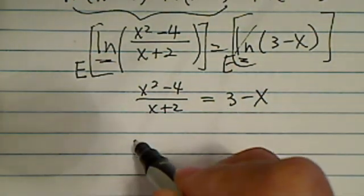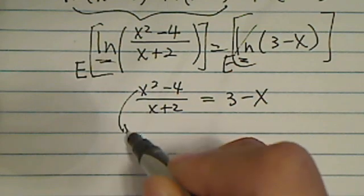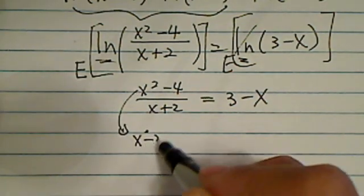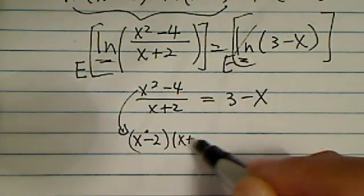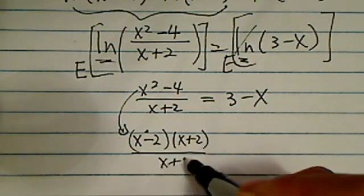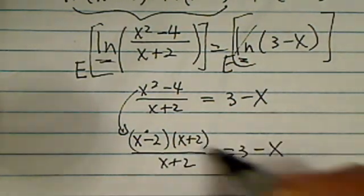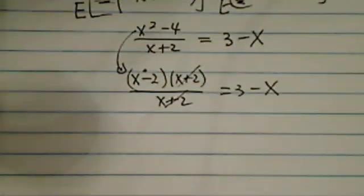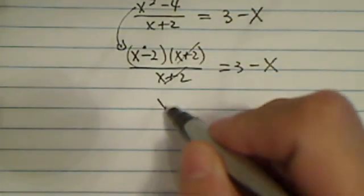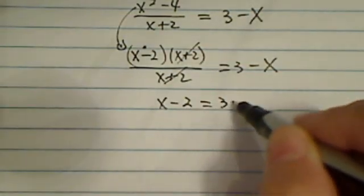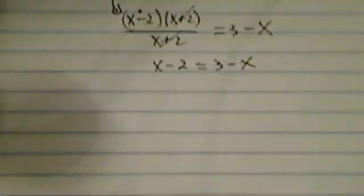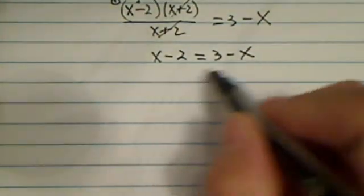So after getting this equation, from here it's pretty easy. You break down the top, factor it to x minus 2 times x plus 2, and the bottom is x plus 2, and this cancels. And lo and behold, you have a first-order nonlinear equation, which is really easy to solve. It's almost pre-algebra,